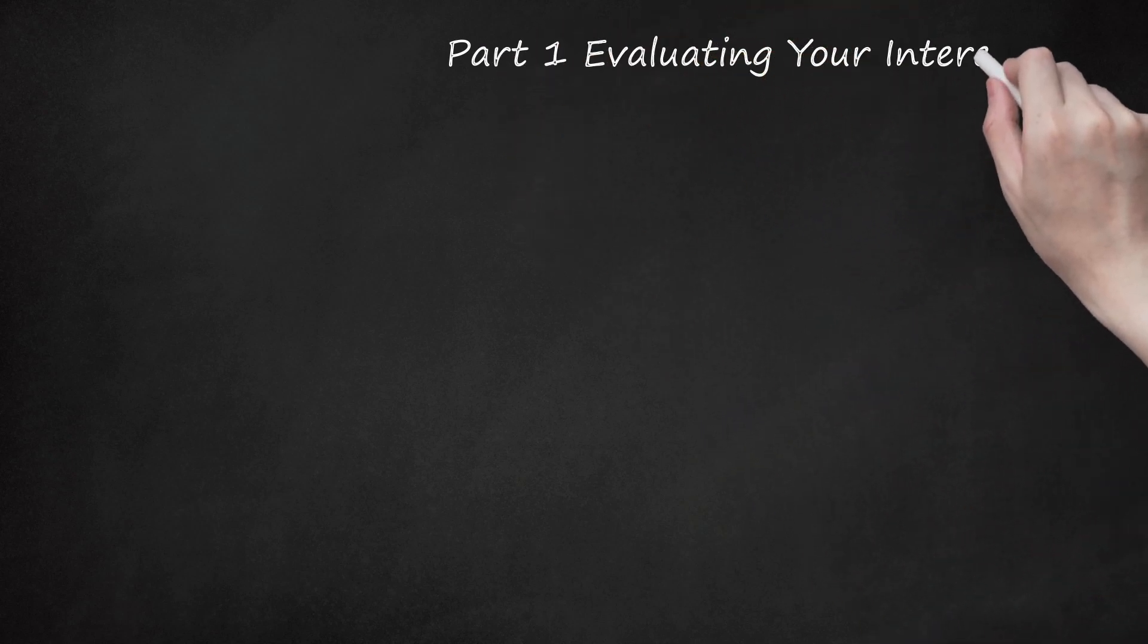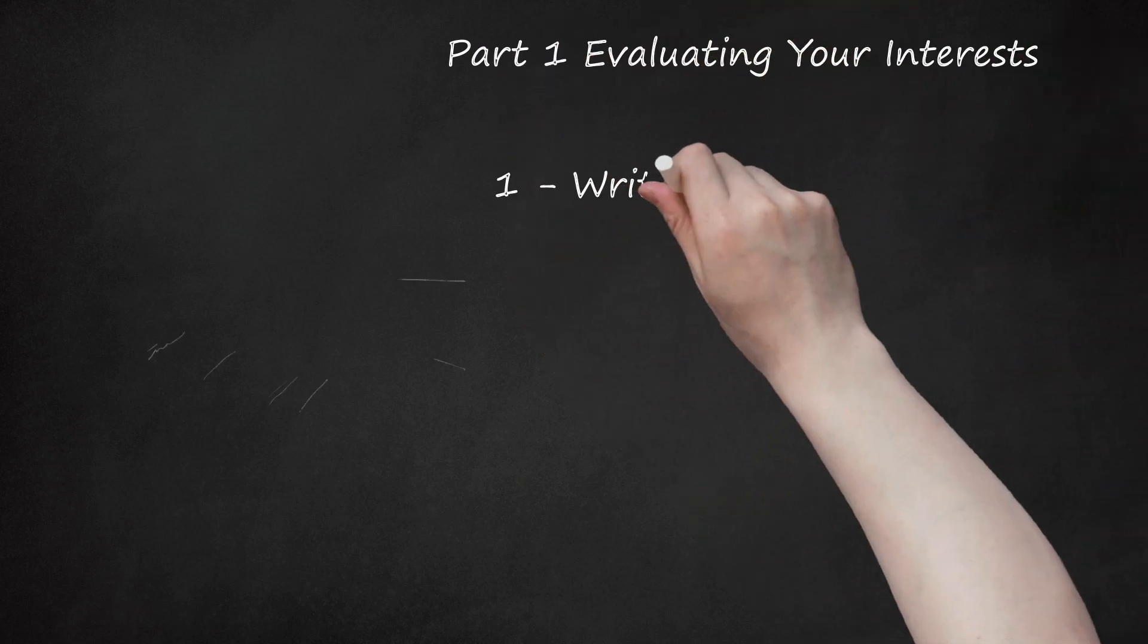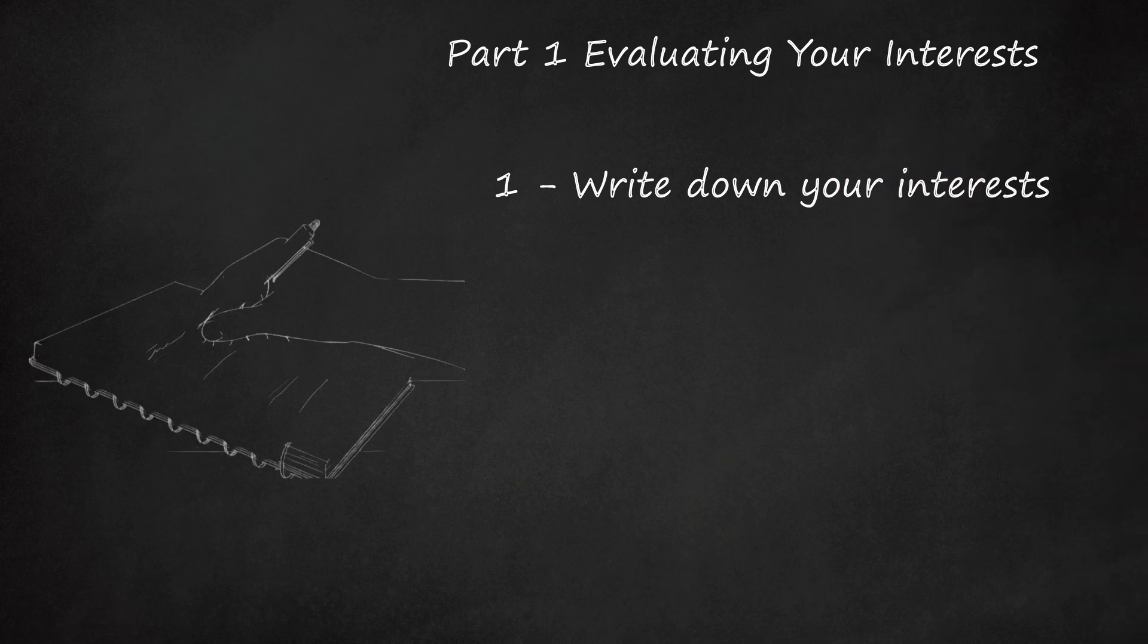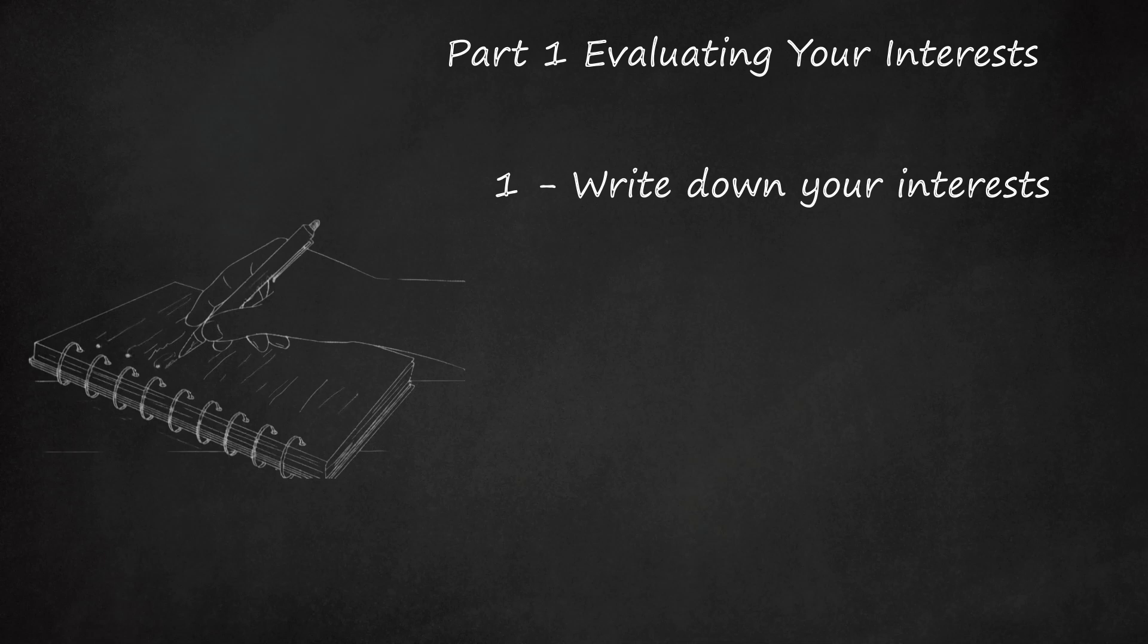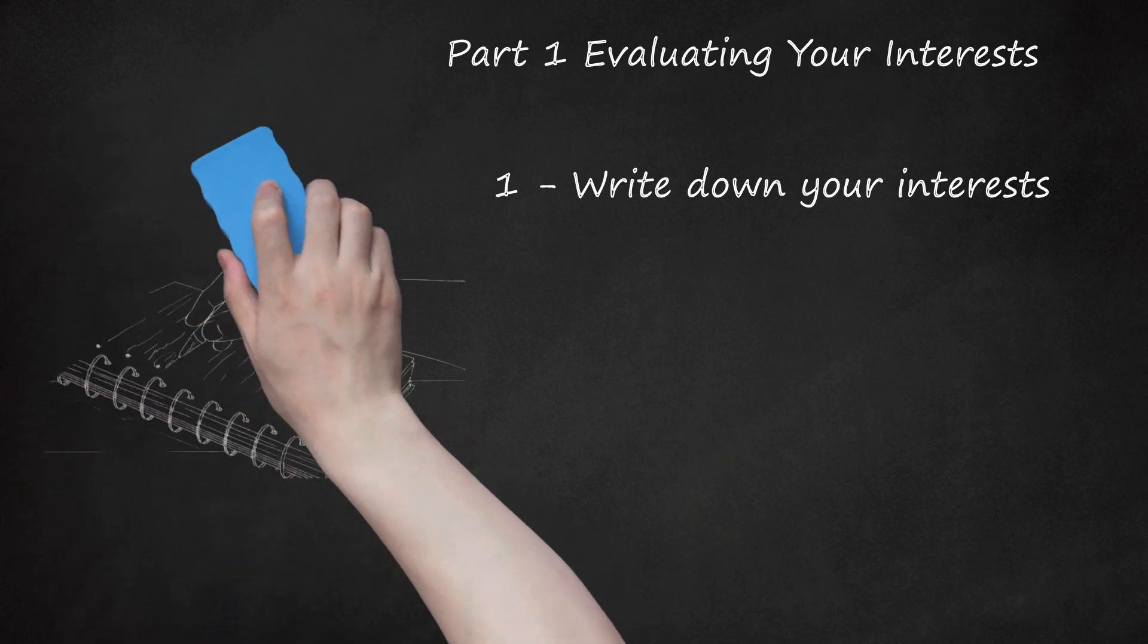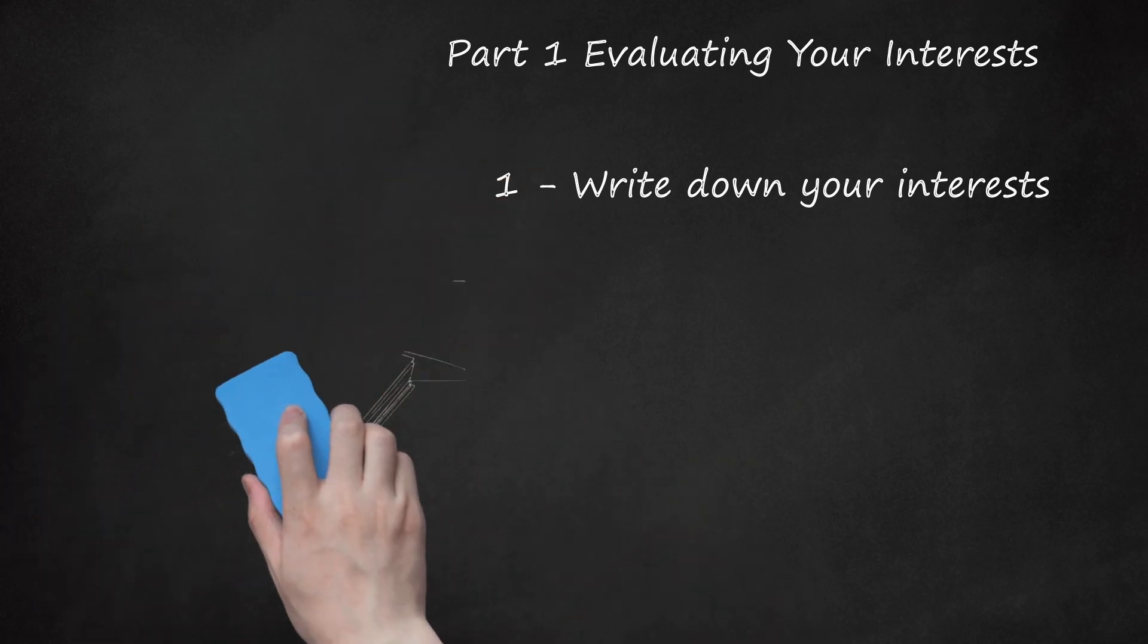Part 1: Evaluating Your Interests. 1. Write Down Your Interests. Think about what your interests are. Think about what you like to do in your spare time, what subjects in school you like the best, and what sort of jobs you can imagine yourself doing in the future. Then write a list of what your top interests are. Try to write as many as you can think of.